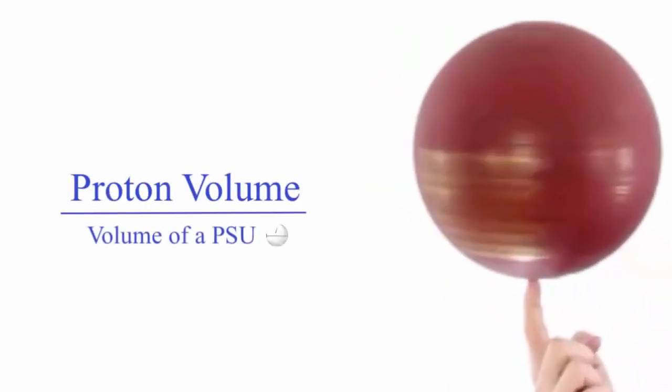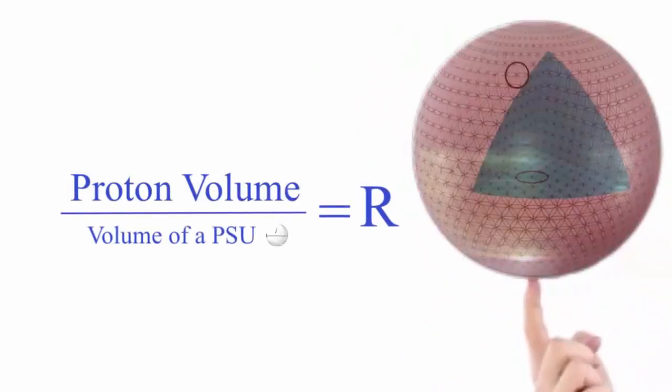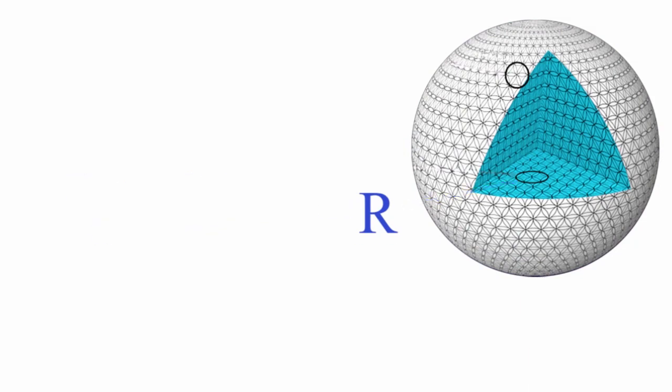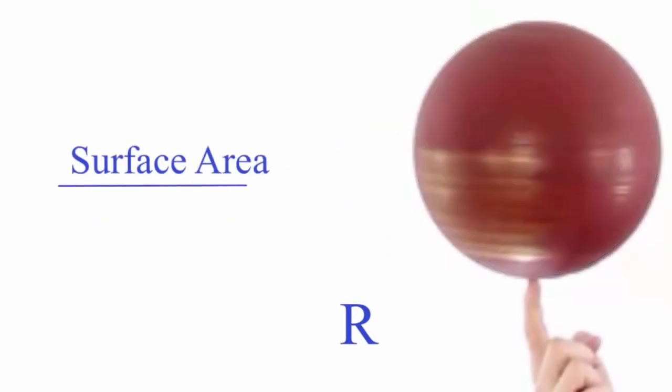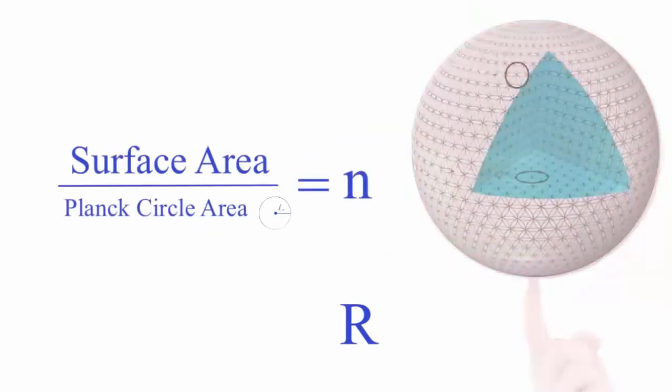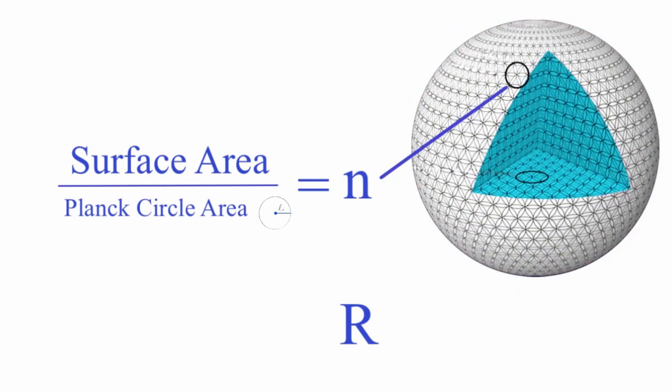Pretend this basketball is a spinning proton. Now, if we take the volume of a proton and we divide it by the volume of a PSU, we get R, or the number of PSUs within the proton. Then, if we take the surface area of the proton and we divide it by the Planck circle area, we get N, the number of areas that we can tile on the surface of the proton.